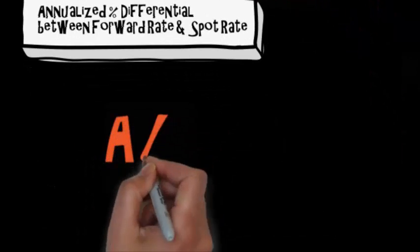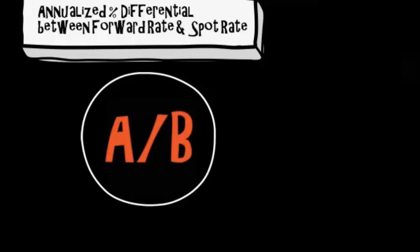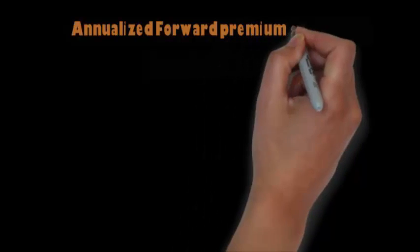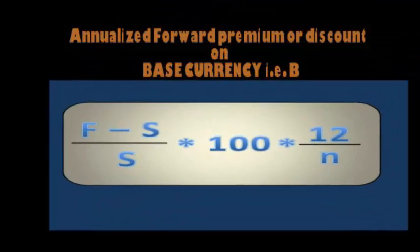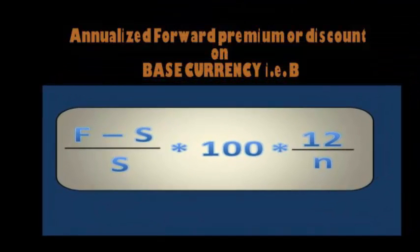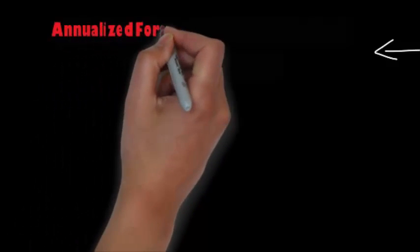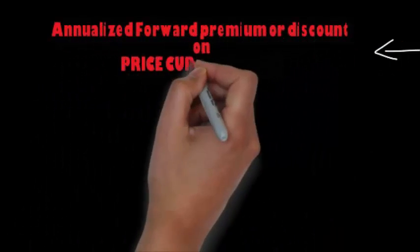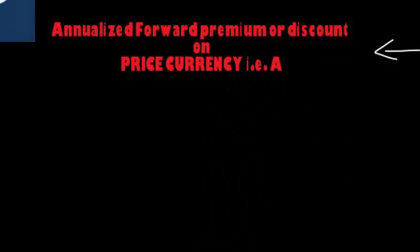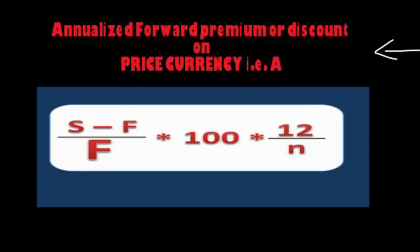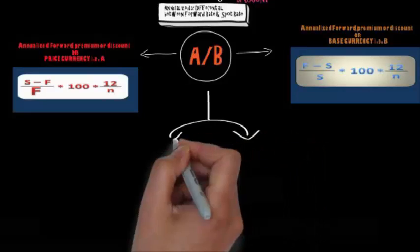In our earlier videos we discussed the form A/B, where B is the base currency and A is the price currency. When calculating on the base currency, the formula is: (Forward Rate − Spot Rate) / Spot Rate × 100 × 12 / N. When calculating on the price currency, the formula is: (Spot Rate − Forward Rate) / Forward Rate × 100 × 12 / N.